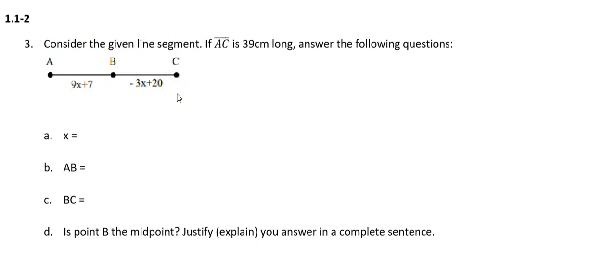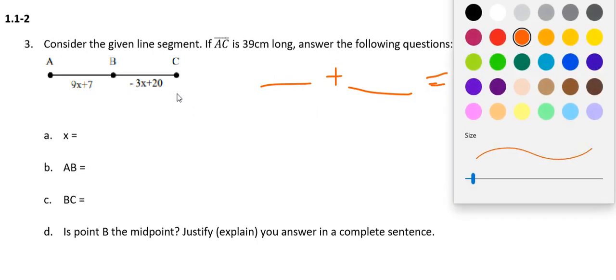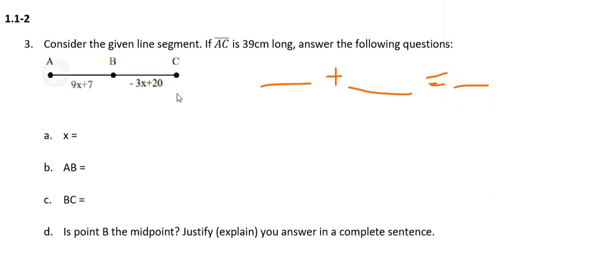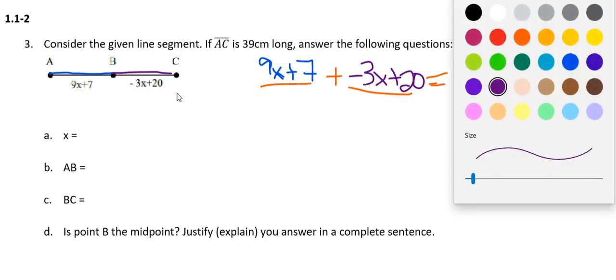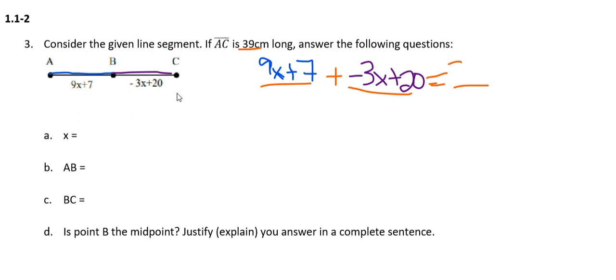What I do know is that I can always take two small pieces and add them together to make the larger piece, and that's how we're going to set up the equation. The segment AB has the equation 9x plus 7. If I take that and add it to the piece on the right — negative 3x plus 20 — those two pieces together equal the entire segment length of 39 centimeters.